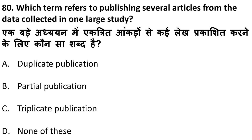Next question: which term refers to publishing several articles from data collected in one large study? Here a researcher collects a lot of data, then publishes one part in one journal and another part in another journal. This is called partial publication — not duplicate publication. Duplicate publication is publishing the same result in two places. Partial publication — dividing one large dataset into multiple publications — is not unethical. It is ethical.